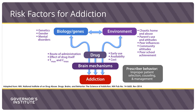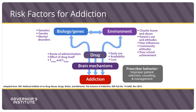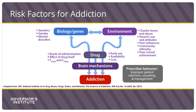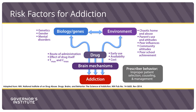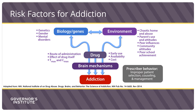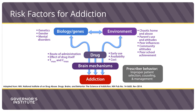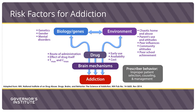Next, I'd like to briefly review the scientific understanding of addiction. What causes addiction? It's thought to be a confluence of genetics, environment, drug, and prescriber factors. While genetic factors account for about half of a person's vulnerability to addiction, the environment a person lives in also predisposes to addiction. In addition, drug factors — like how quickly drugs get into the brain or their ability to produce euphoria — play a role.